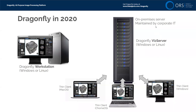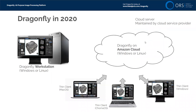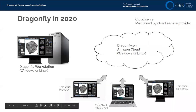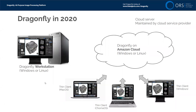If you replace on-premises servers with servers run in the cloud maintained by your cloud service provider, then you have Dragonfly on Cloud. Dragonfly runs on the cloud and you have control over the configuration. You can connect from any local computer, with almost no requirements — lightweight laptops, computers without GPUs, etc. That's Dragonfly on Cloud.